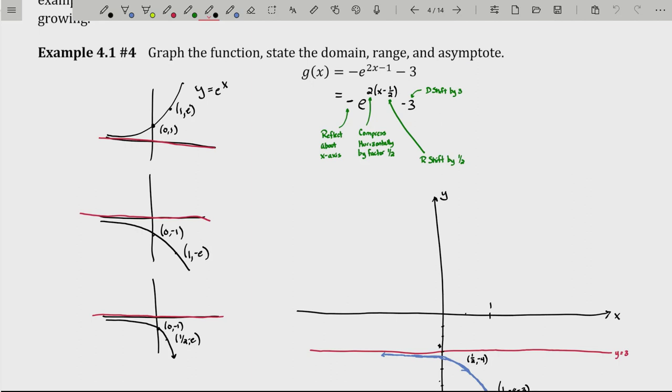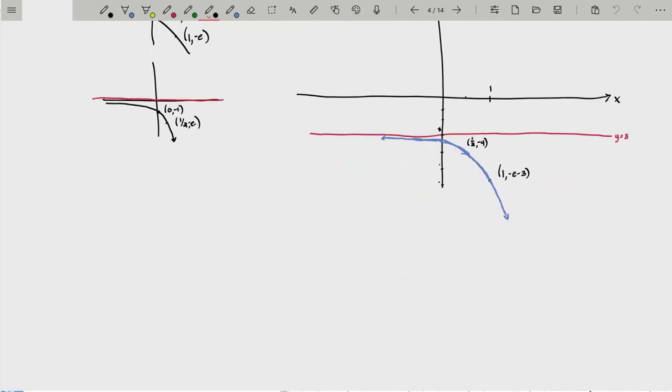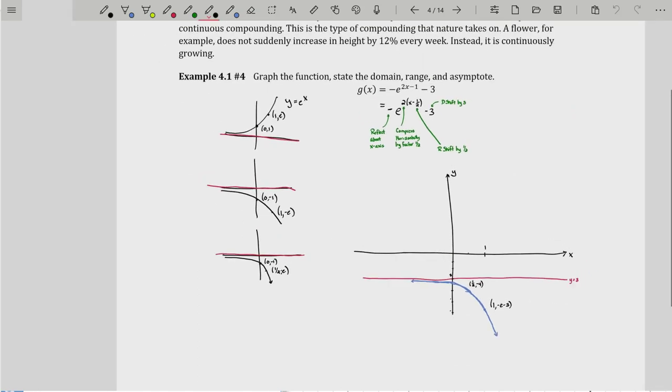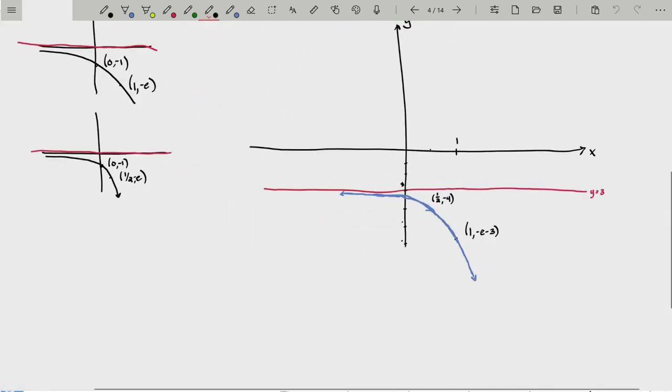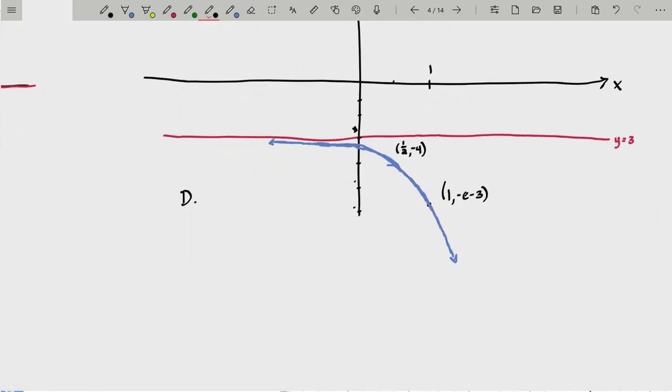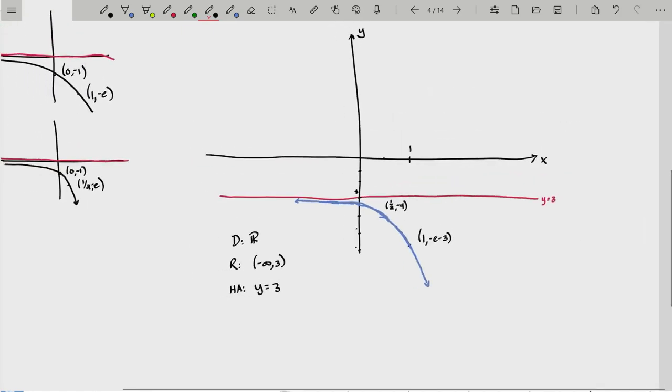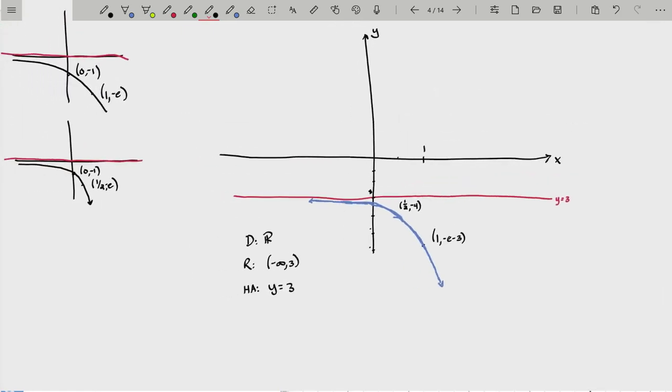By the way, I realize I didn't state the domain, range, and asymptote for g(x) = -e^(2x-1) - 3. Domain of any exponential function is all real numbers. The range: y values dip down to negative infinity and climb up to -3, not including -3. The horizontal asymptote has equation y = -3. Sorry, I realized this while working on the last example.